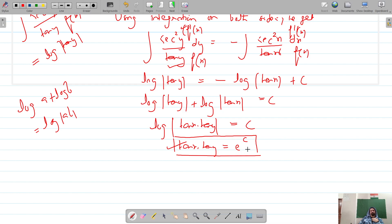E raised power c is also an exponential constant, so instead of this we can simply write a constant that is c.